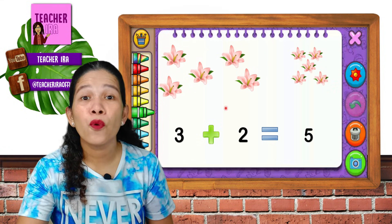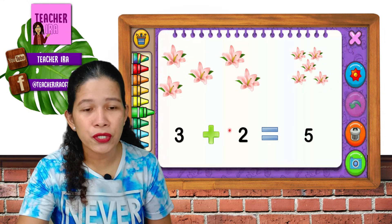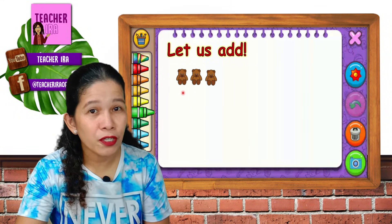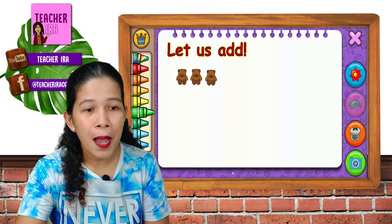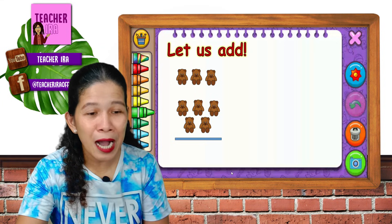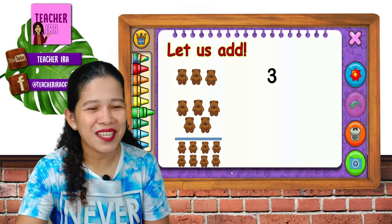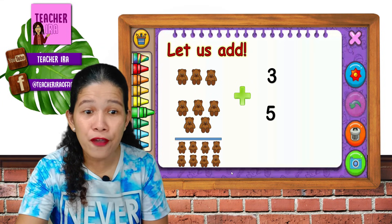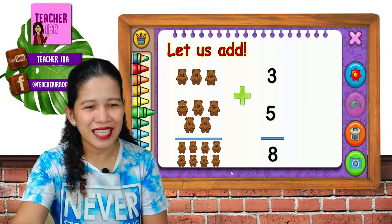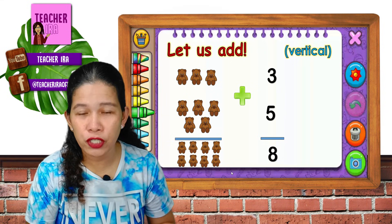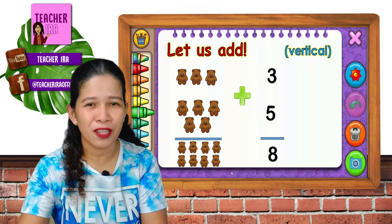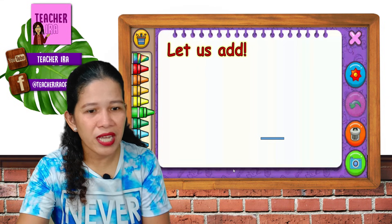How did we do it? We counted all the objects together. Now let us add — let us count the bears: one, two, three plus one, two, three, four, five bears. That's three plus five equals eight. Very good. This is the vertical way of addition — numbers or objects are arranged in a standing way. We call this vertical.